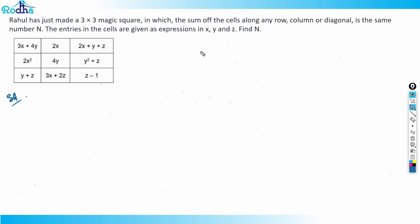So basically you know that the sum of cells along any row, column is same. So let's try to equate one by one.